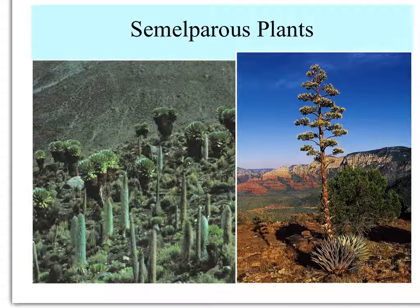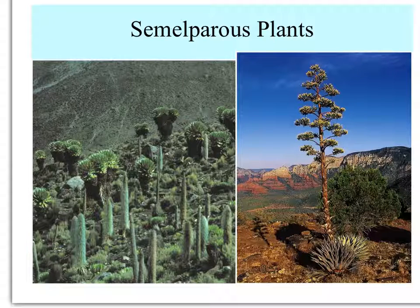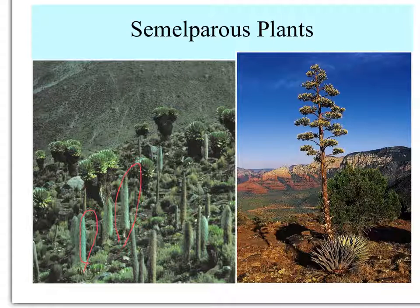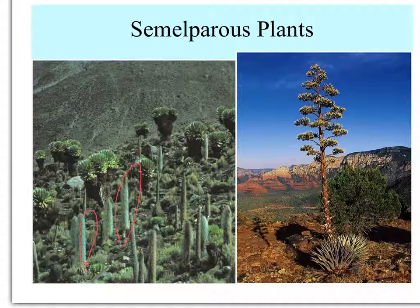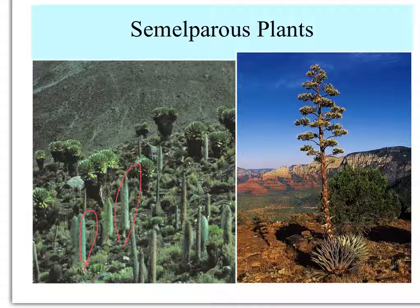Here are a couple of semelparous plants. On the left is a high-elevation member of the Lobeliaceae, which grows slowly as a rosette and then flowers on these hairy-looking stalks — after they flower, the plant dies. On the right is an agave plant with a basal rosette of leaves. When it flowers, it puts over 75 to 80 percent of its biomass into that inflorescence, after which the plant dies. So if those flowers don't get pollinated, it's all for naught.